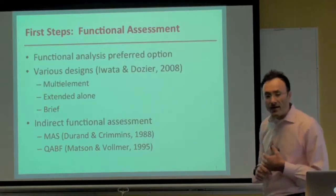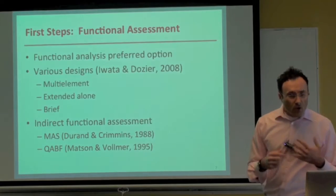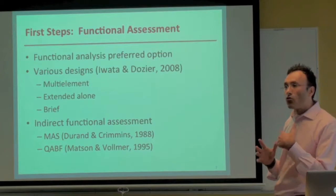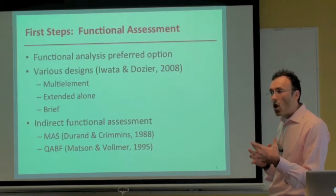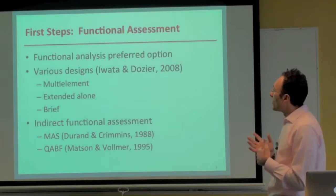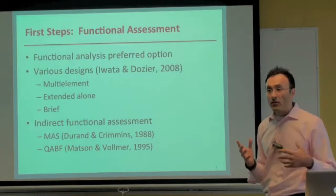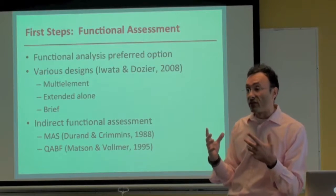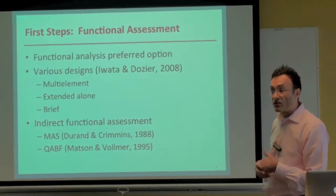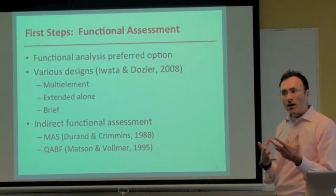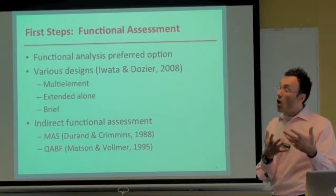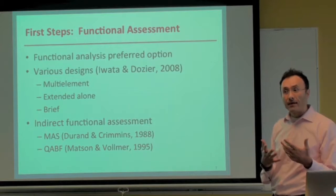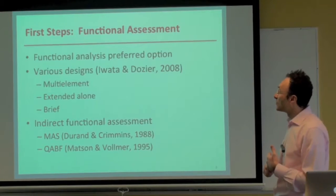Three approaches are worth highlighting. With the multi-element approach, a participant experiences rapidly alternating conditions whereby an experimenter manipulates antecedents and/or consequences and notes their effects on behavior. We're trying to find out: can we turn on or turn off the behavior? If we can, we've likely identified the function.